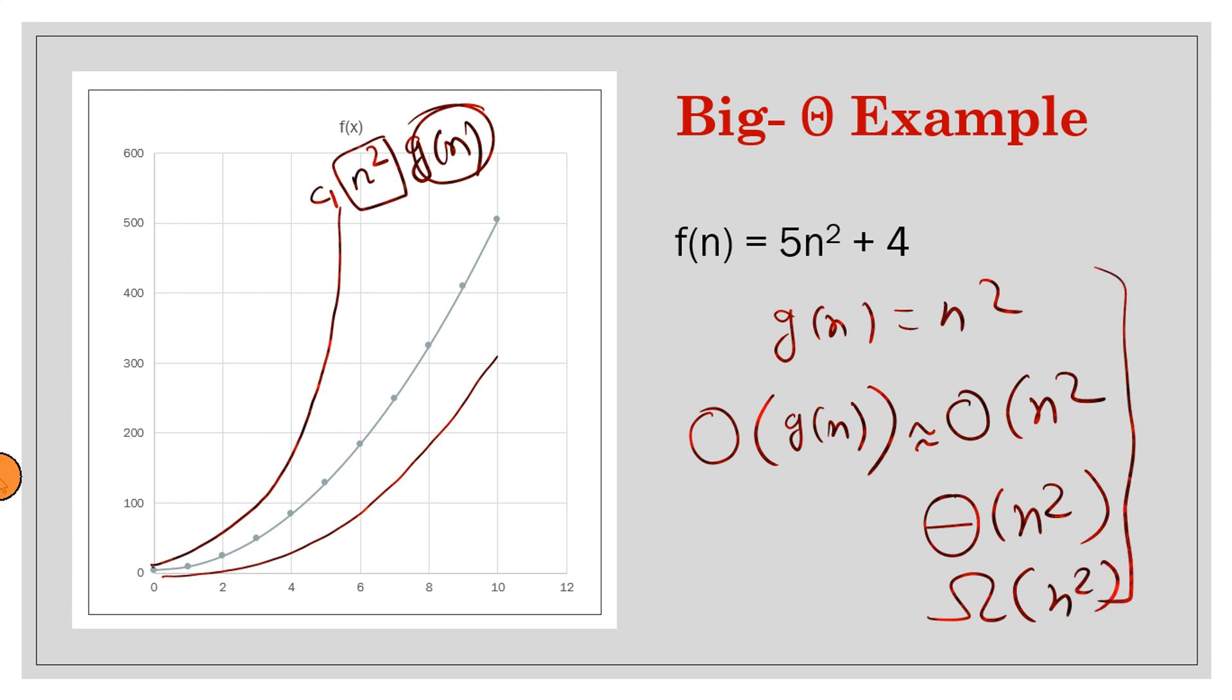So with this, we complete our discussion on different asymptotic analyses. There are also different versions of this. Everywhere we were writing this big word: Big-O, Big-Omega, Big-Theta. There are also small-o, small-omega, and small-theta notation.